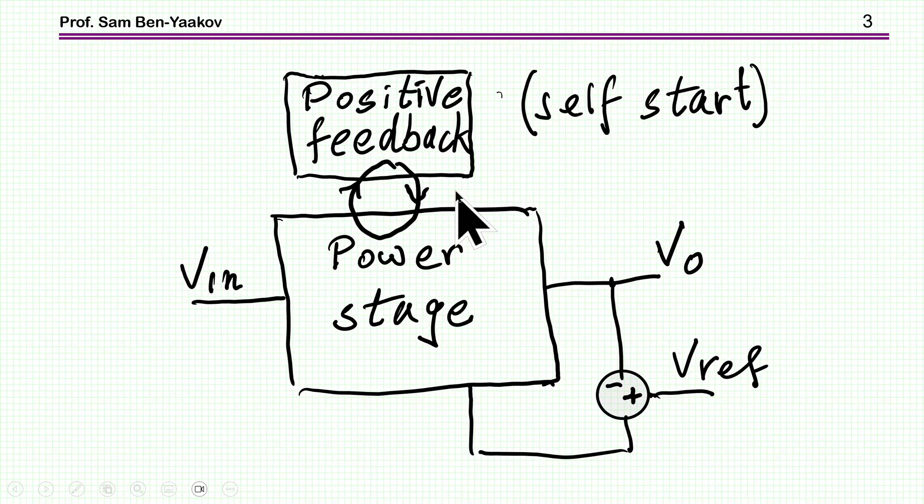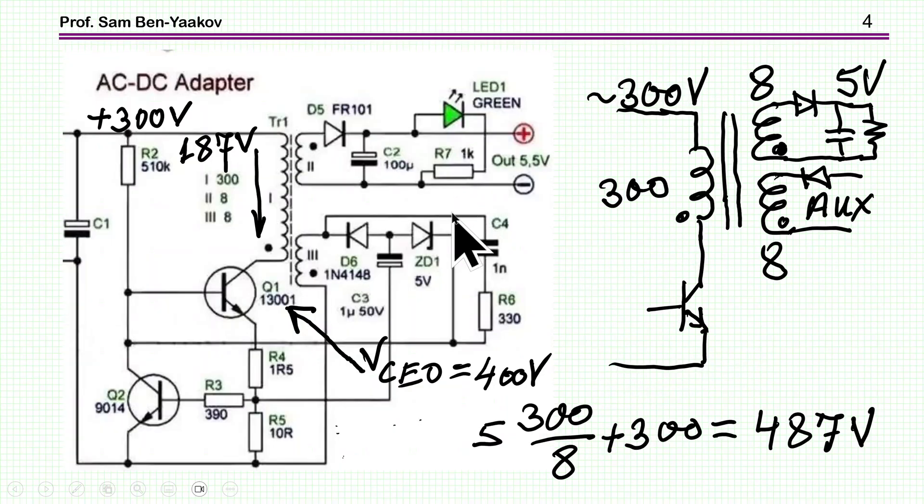So here it is, what we have here is the stage itself, the circuit itself. This is again a flyback, 300 turn primary, 8 turn secondary, the two secondaries.